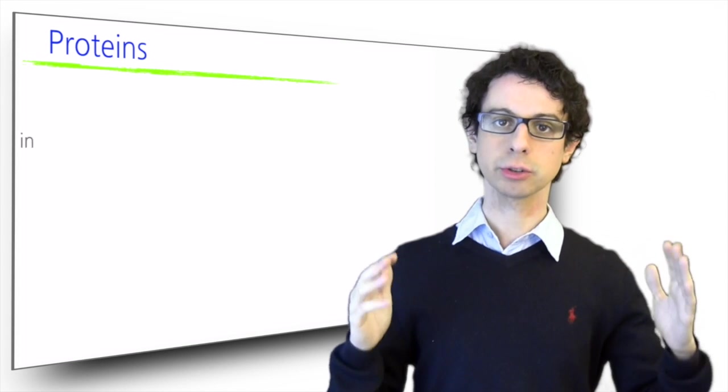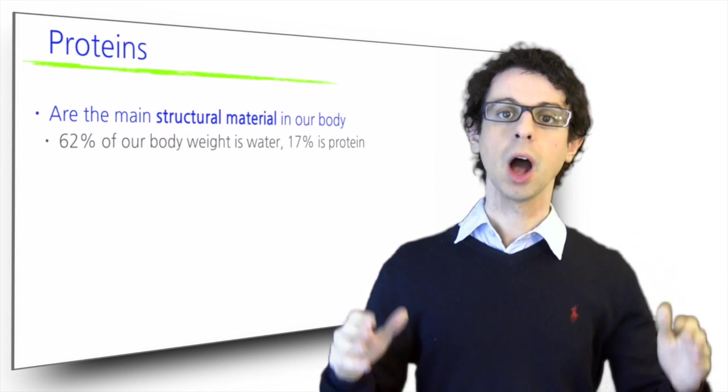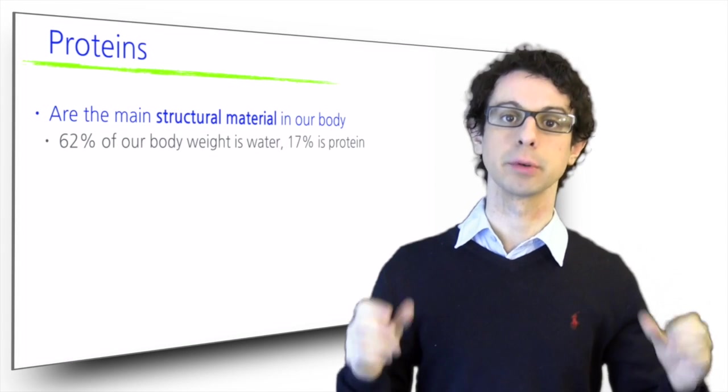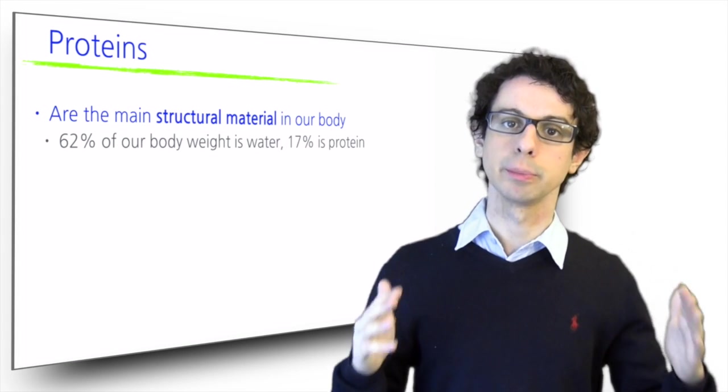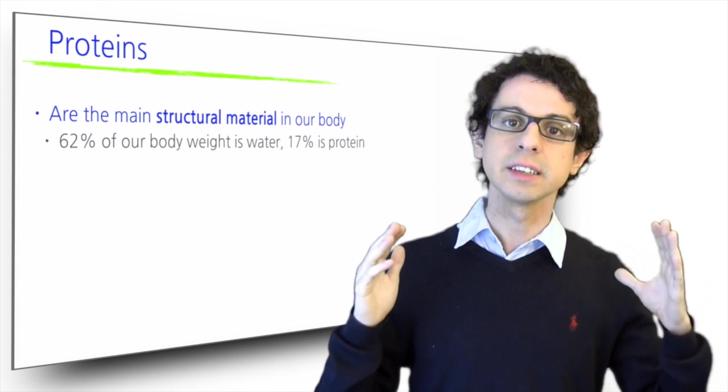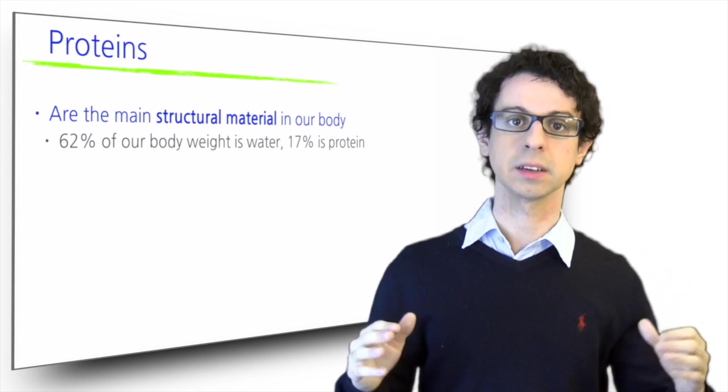Proteins are the main structural material in our body. Almost 20% of our body weight is accounted for by proteins. Our muscles, our bones, our skin, all of our organs, our hair, our nails—protein is the stuff all these things are made of.